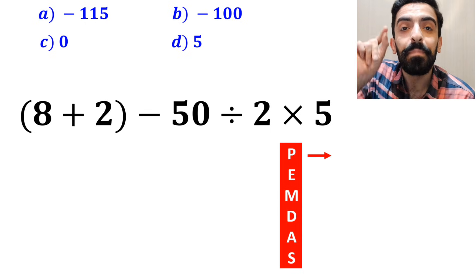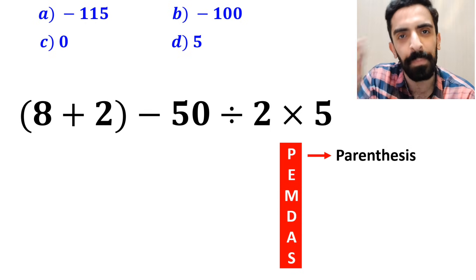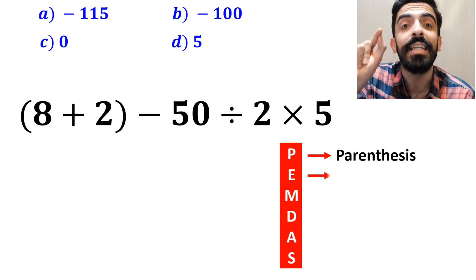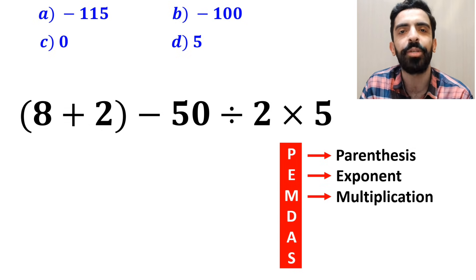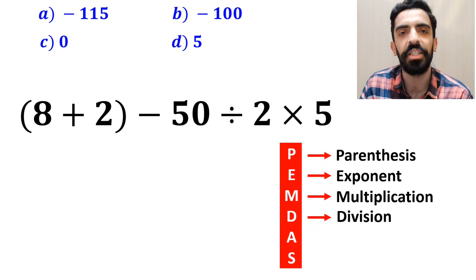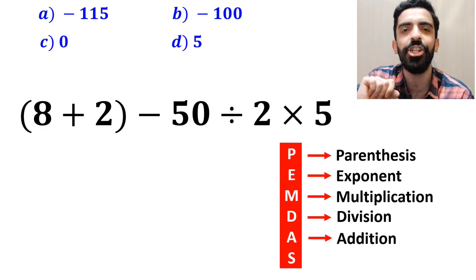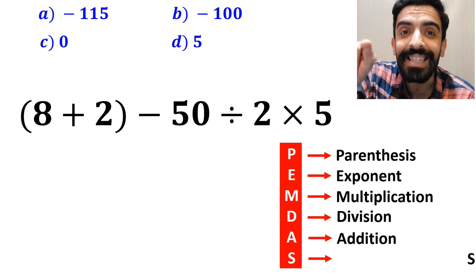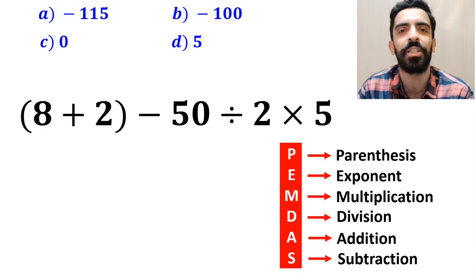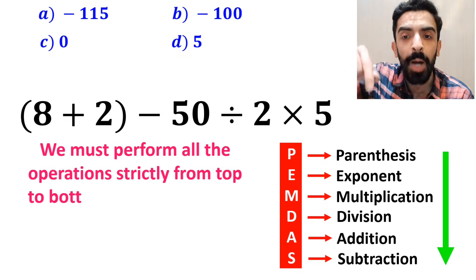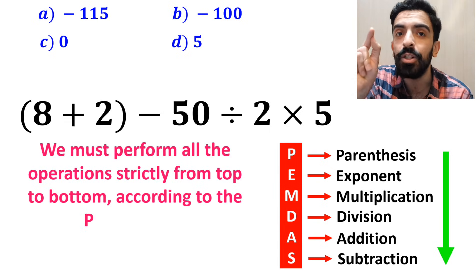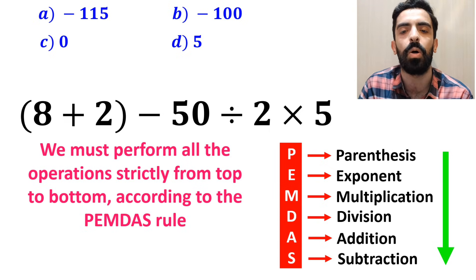In this rule, P stands for parentheses, E stands for exponent, M stands for multiplication, D stands for division, A stands for addition, and S stands for subtraction. We must perform all the operations strictly from top to bottom according to the PEMDAS rule.